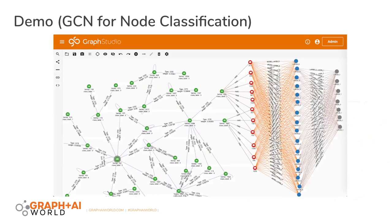Let me show you what the graph looks like after we load the data into the database. On the left is the citation graph. Each paper connects to the words in that paper, and the word frequency is stored on the edge between the paper and words. Different papers can share the same words. Those words connect to our hidden layer, and the hidden layer connects to the output layer. You can see that the neural net is actually shared by all papers in this graph.